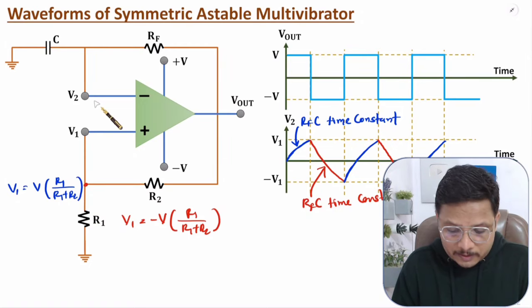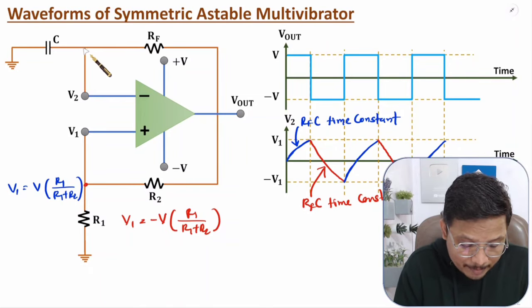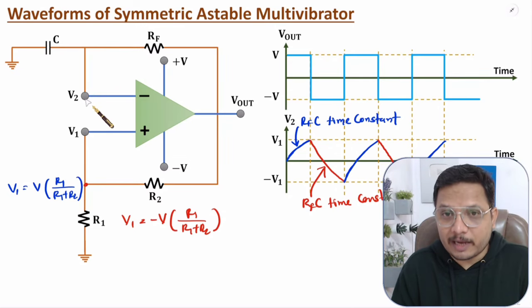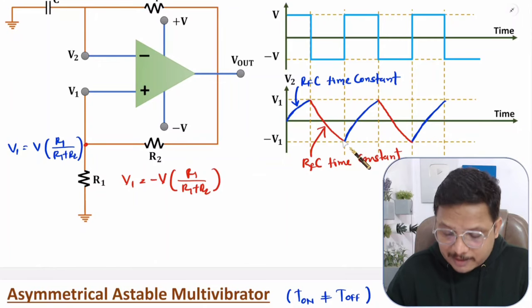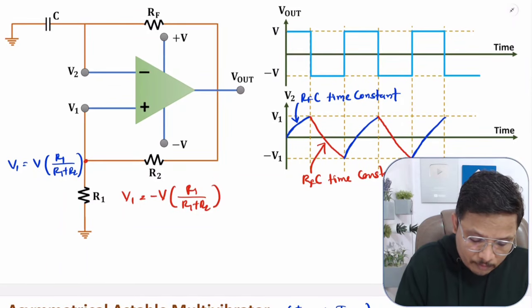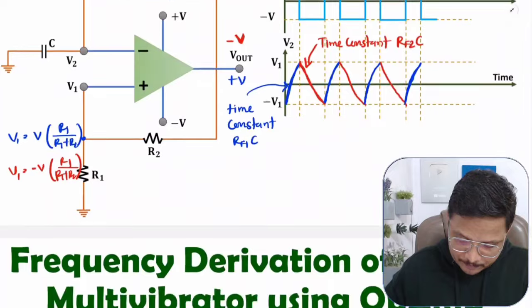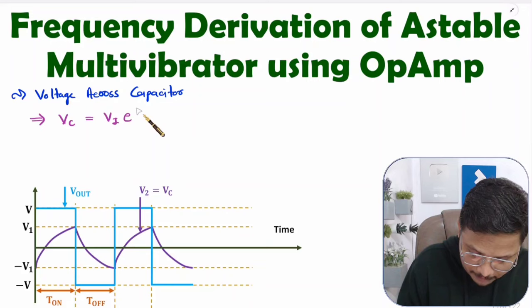For the symmetrical astable multivibrator, one should know that the frequency equation is purely based on the voltage at the capacitor, that is voltage V2. As I explained in the working, V2 varies between minus V1 and plus V1. Based on this time constant, the frequency will be determined. I will derive the complete frequency equation step by step. First, one should know the voltage across the capacitor. Voltage across capacitor Vc equals initial voltage across capacitor into e to the power minus T by time constant.